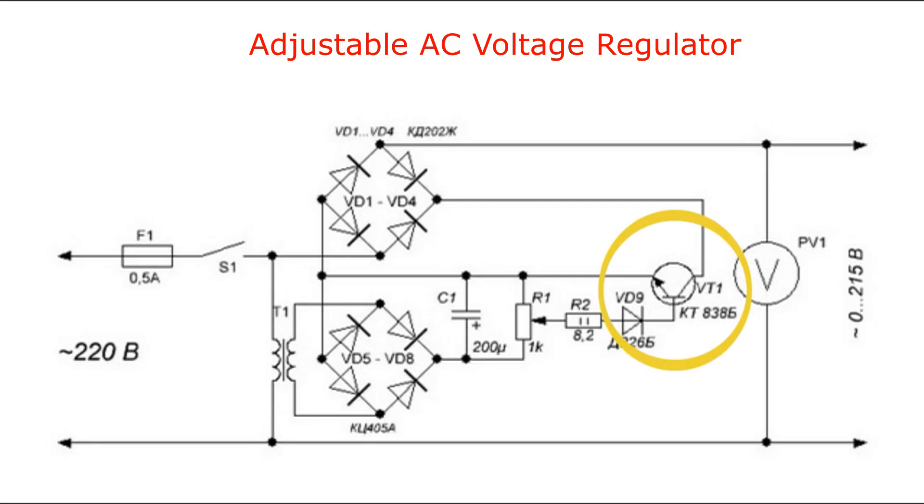The transistor is connected in the diagonal of a bridge made of diodes from D1 to D4, which acts as a variable resistor for the load. The transistor's base current is regulated by variable resistor R1.